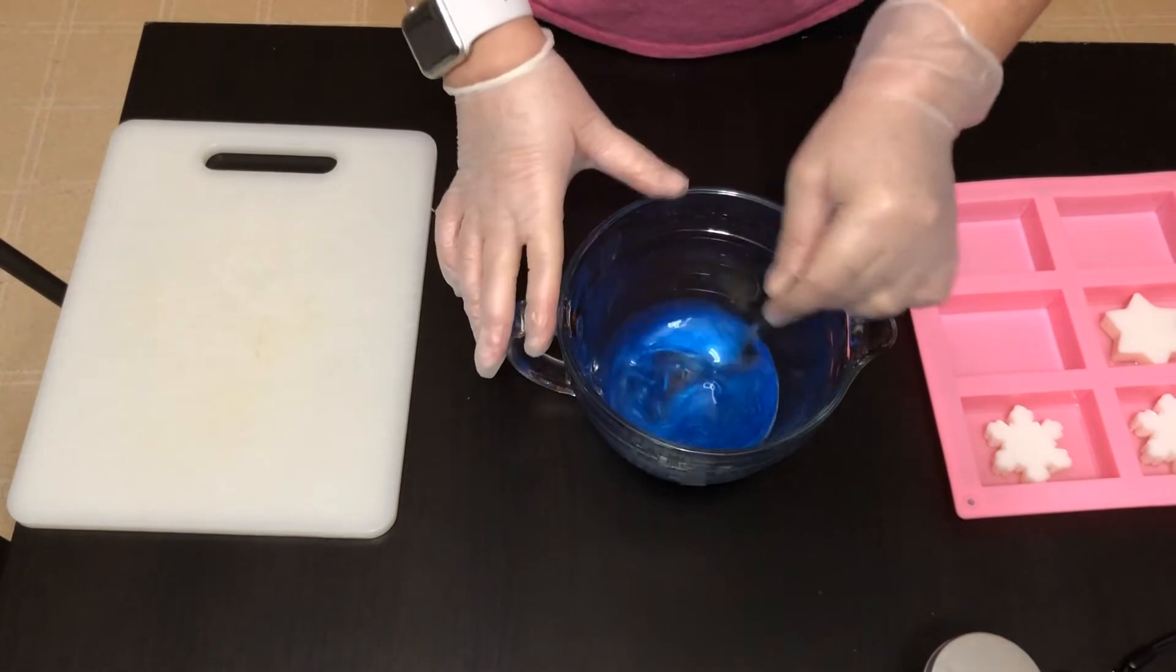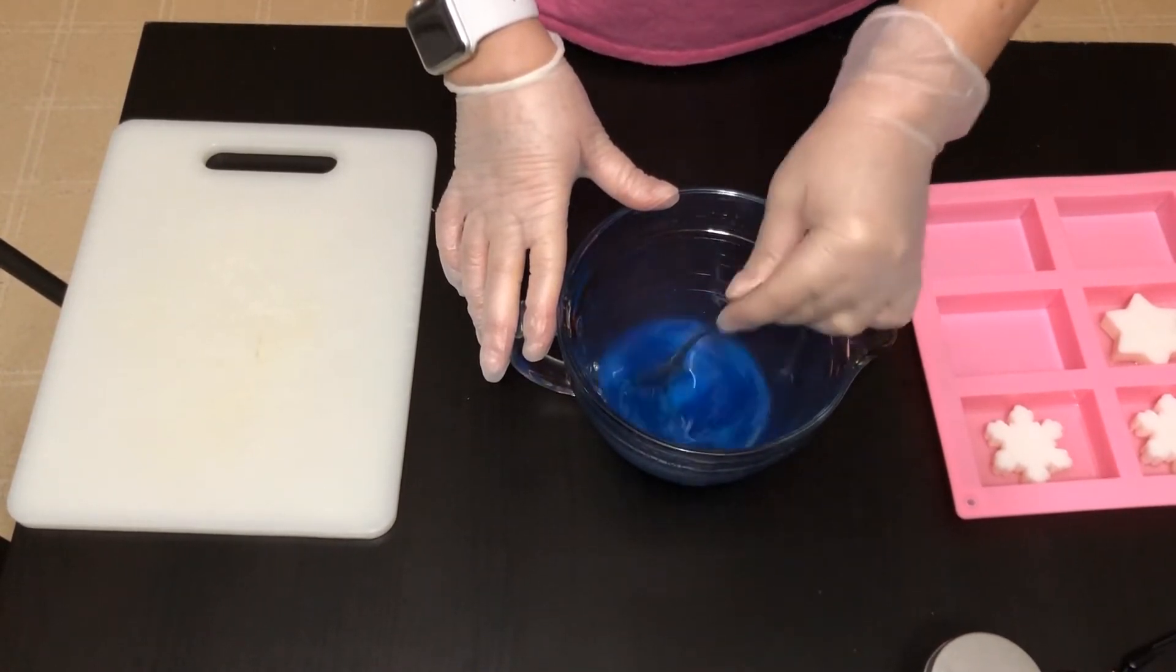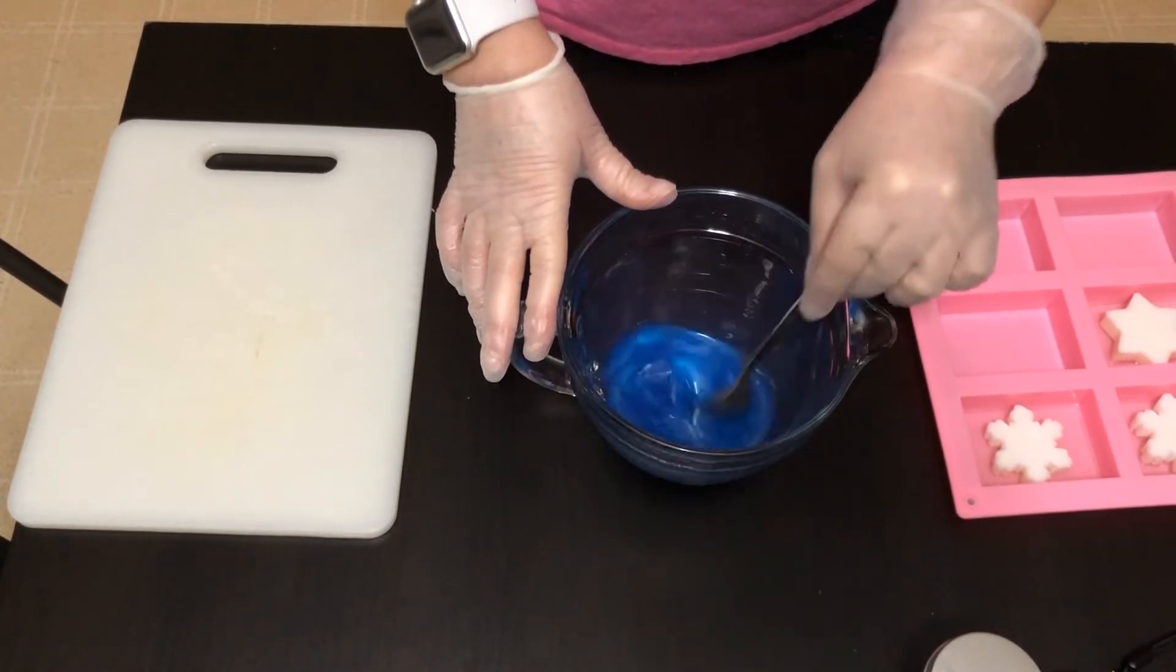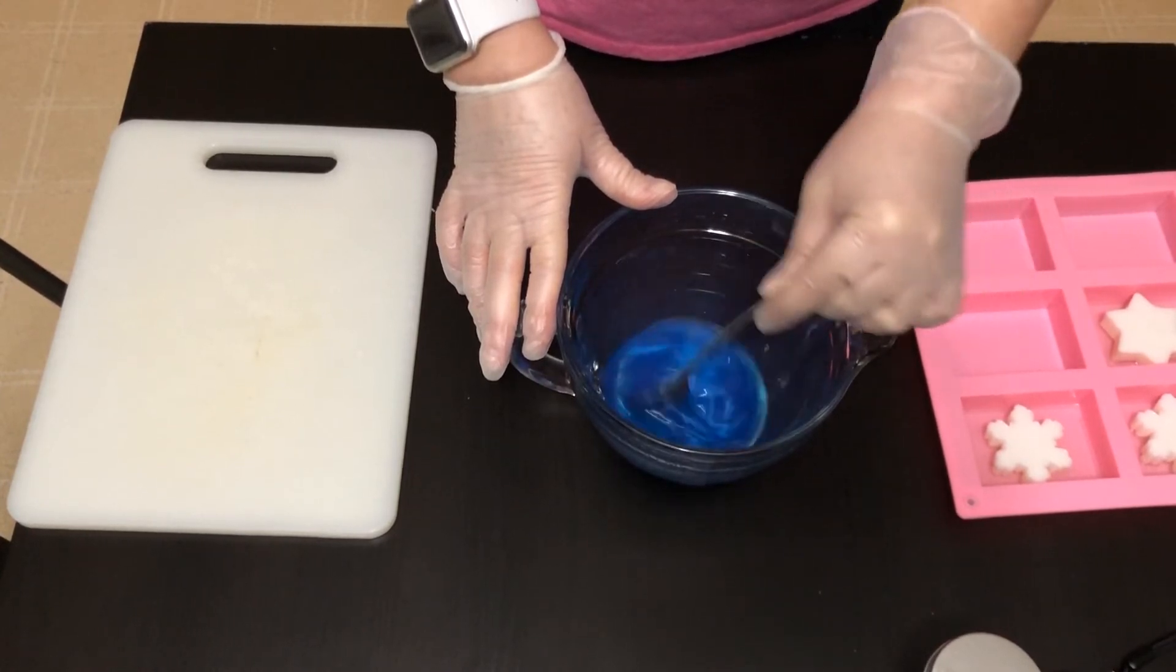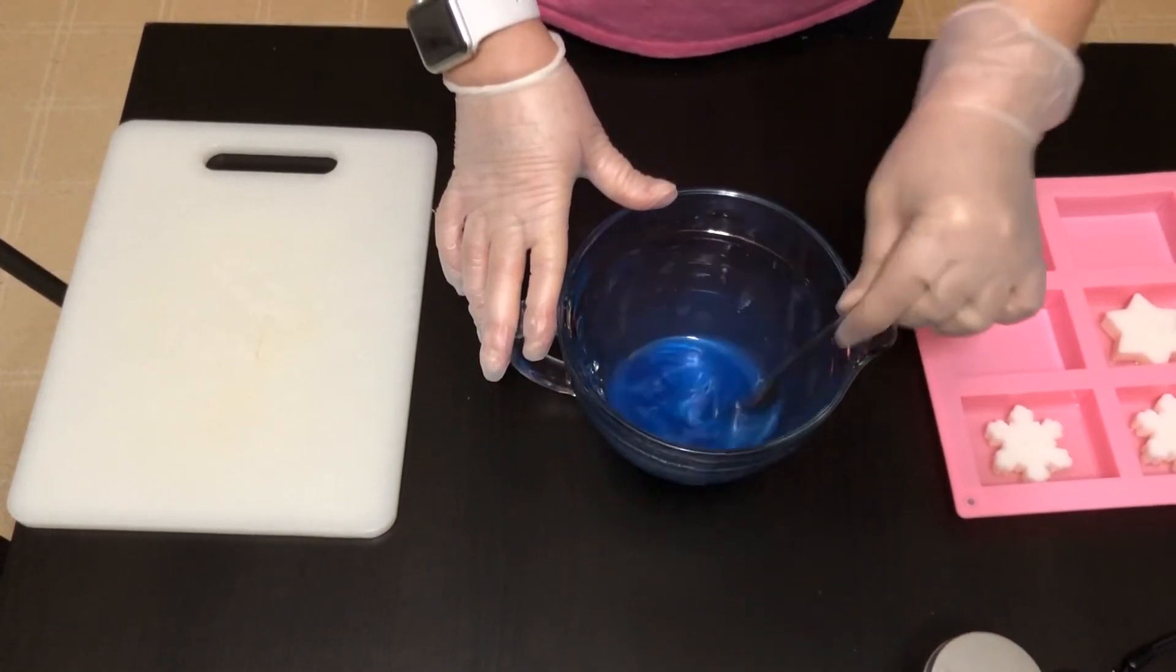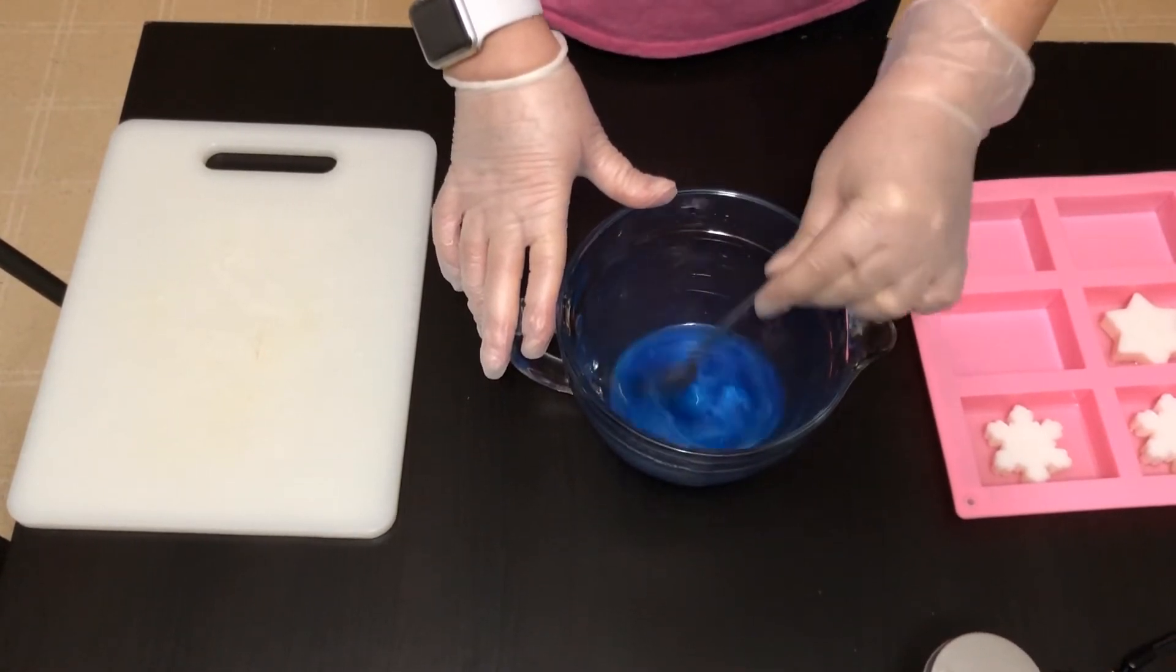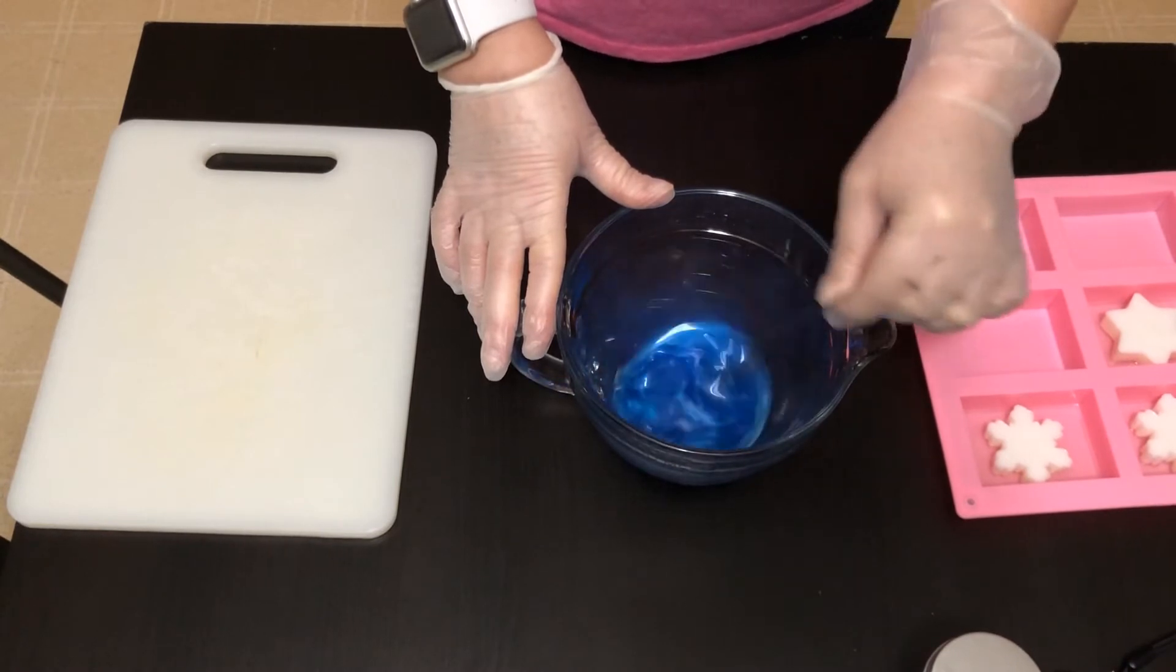So we're going to go ahead and give this a stir and we will want to let this cool down that way when we pour it over our embeds it doesn't melt. And we'll want it to get down to about 115 to 120 degrees and then we should be good.